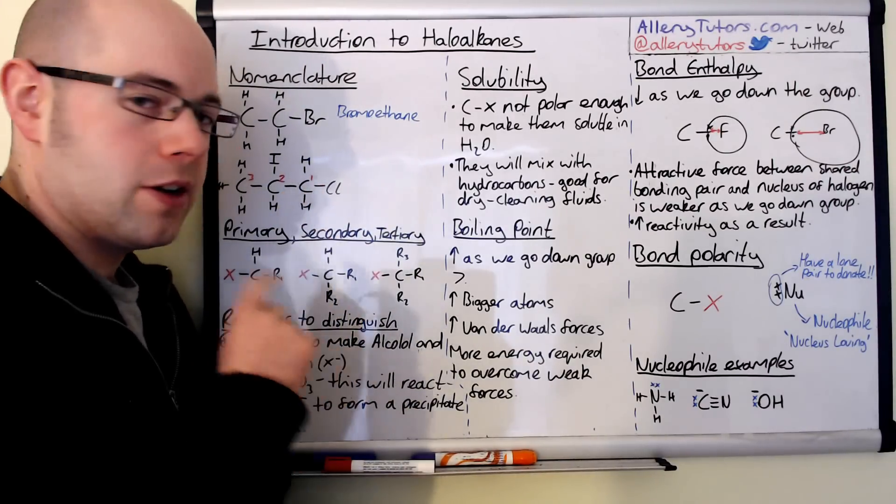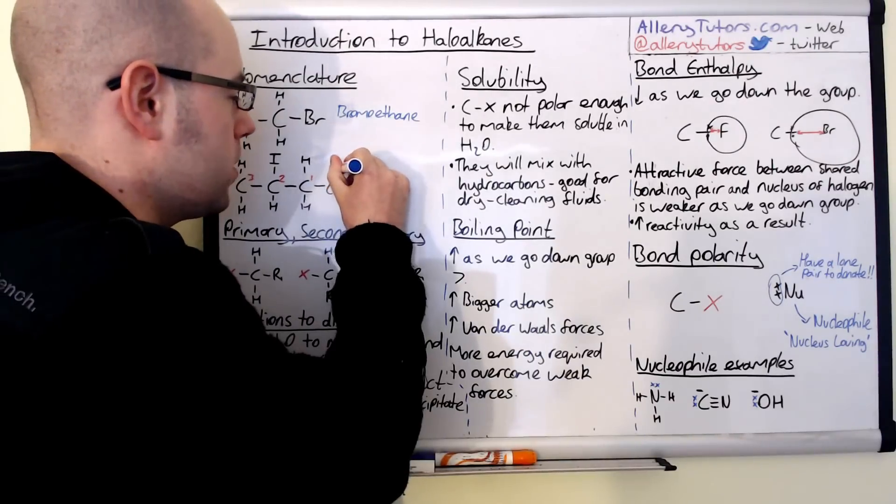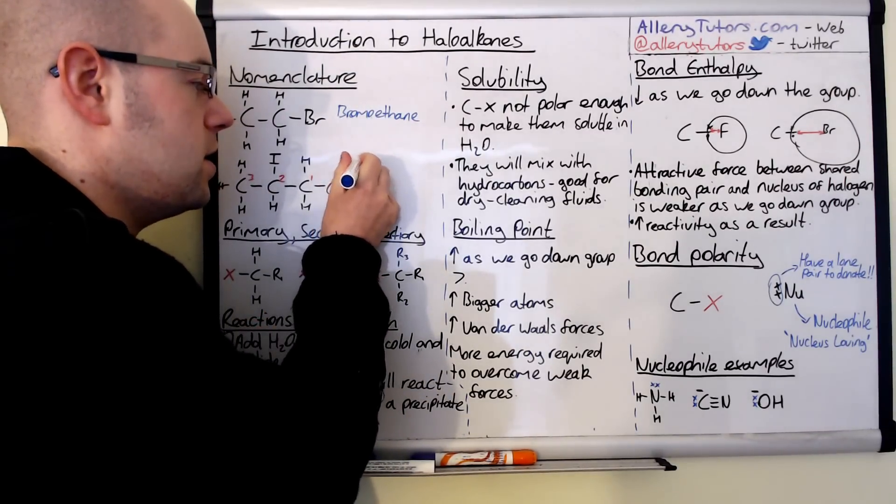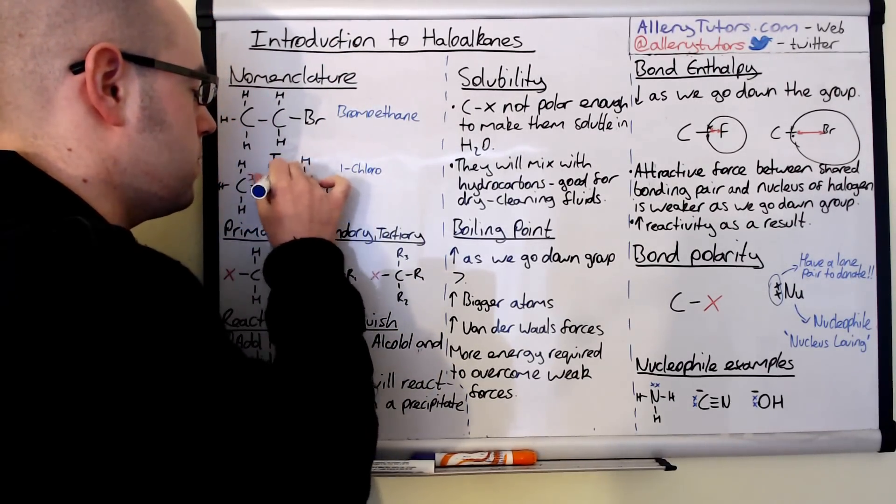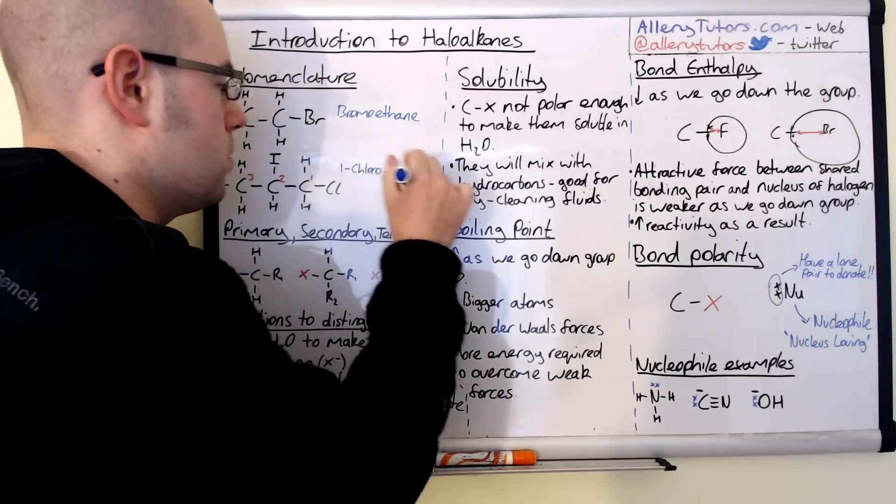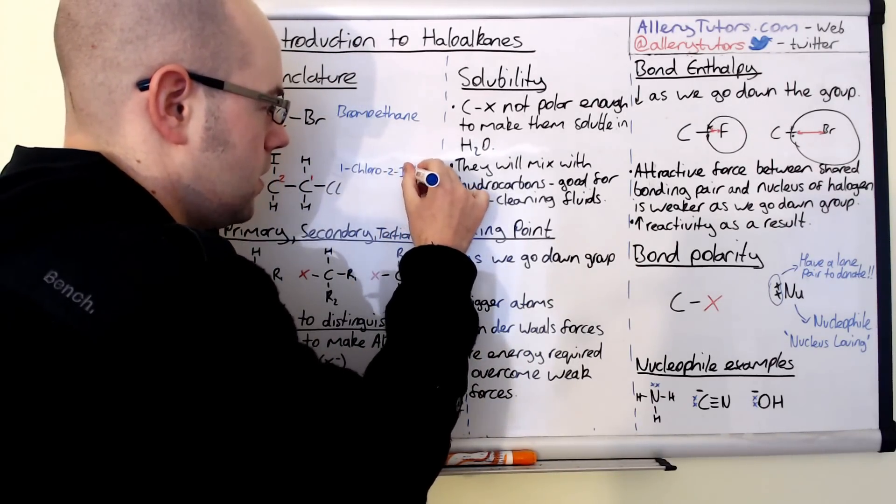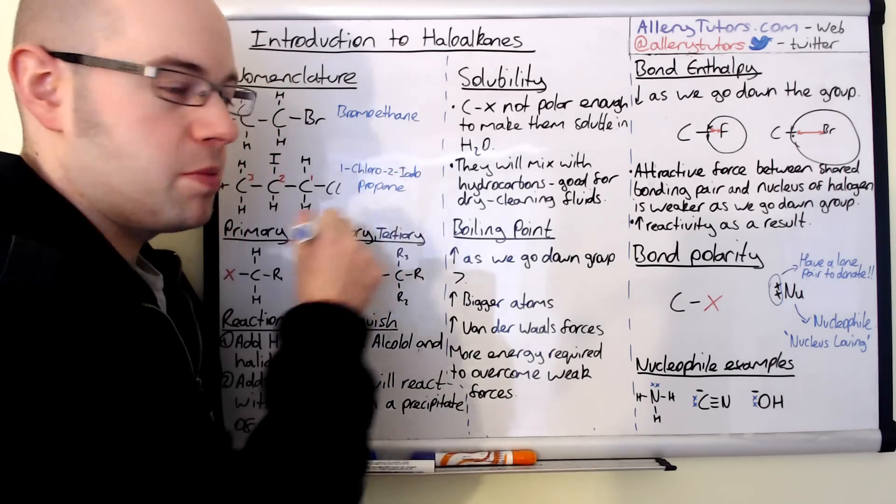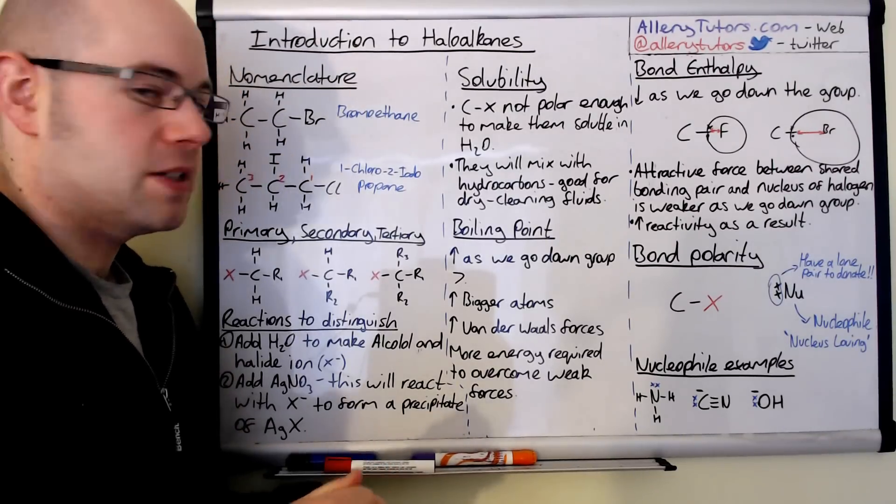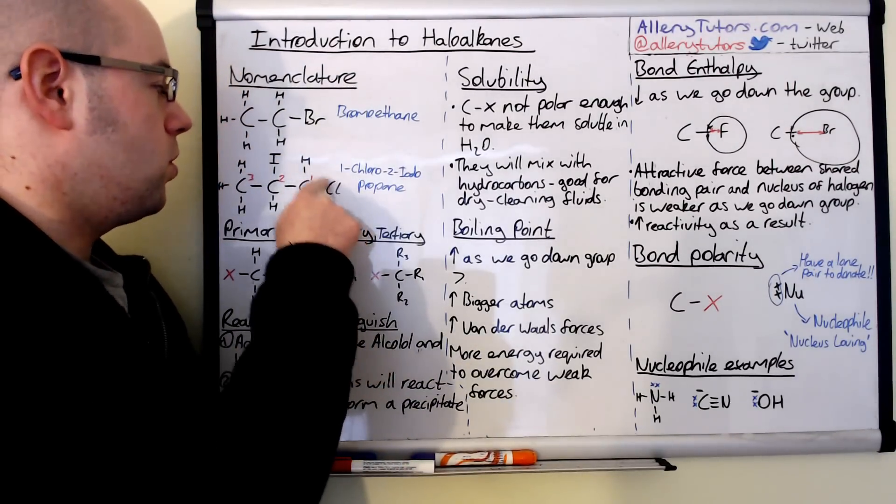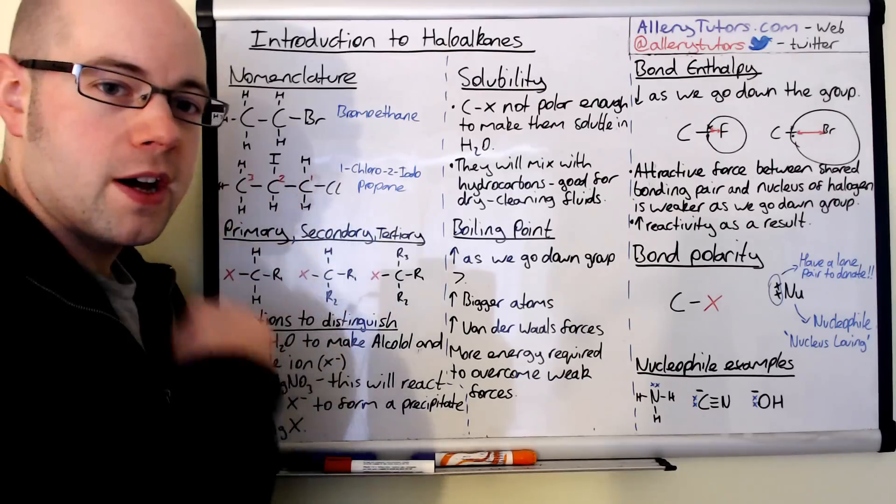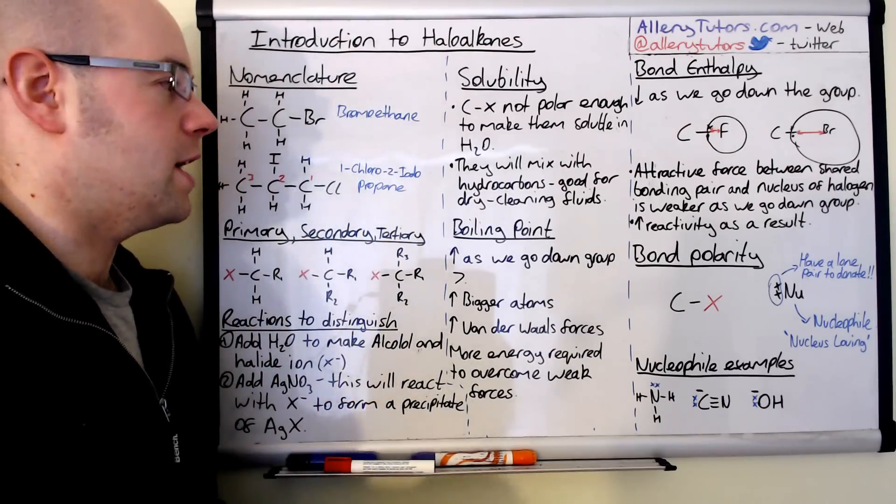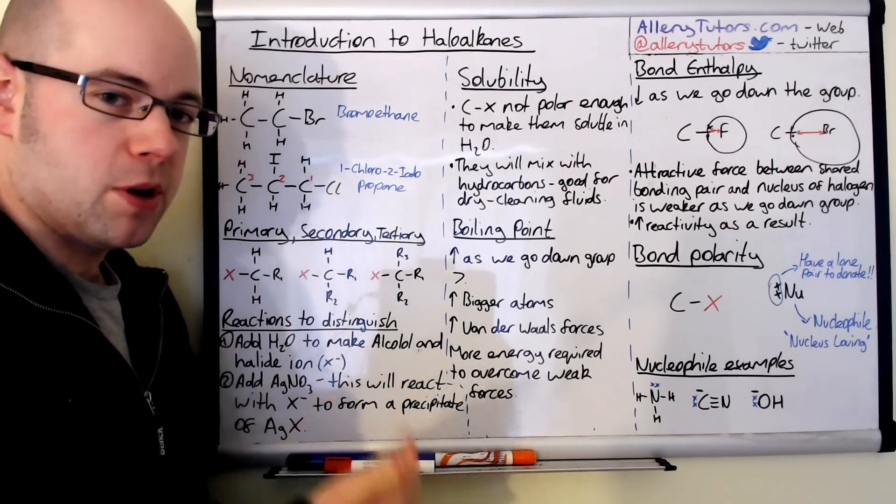In terms of the naming of this molecule we start with the lowest letter in the alphabet first between chlorine and iodine. C comes before I so we name the chloro one first. So we write 1-chloro because it's on the first carbon. We put the dash in between the one and the chloro bit. That's really important. And then we've got 2-iodo because that's the iodine one. And then three carbons means it's propane. It's not numerical order, it has to be alphabetical always. C comes before I.